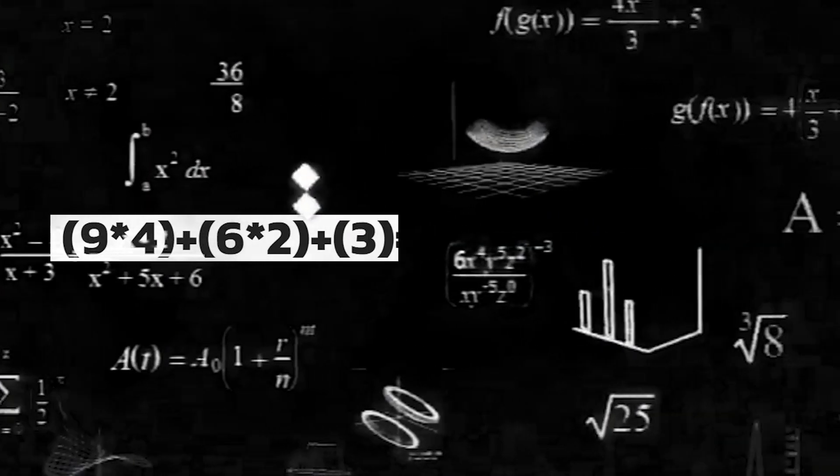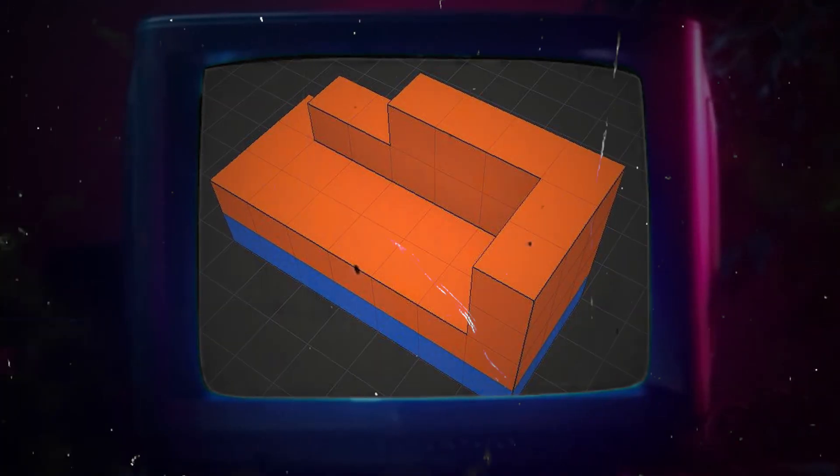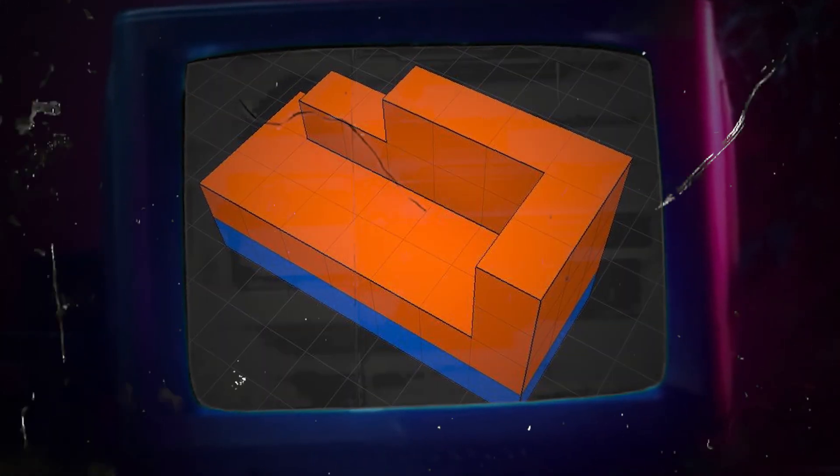Some users contended that the equation didn't provide enough information, and that 51 could only be the answer if we assumed every row was filled with three cubes.